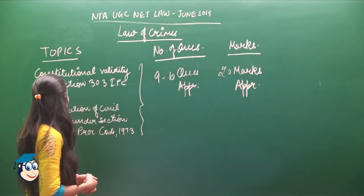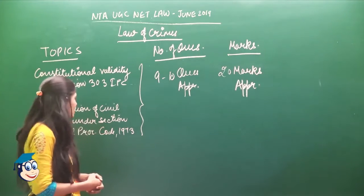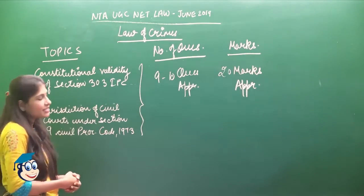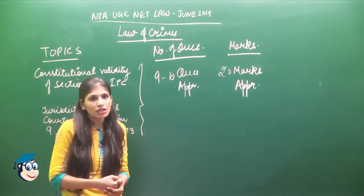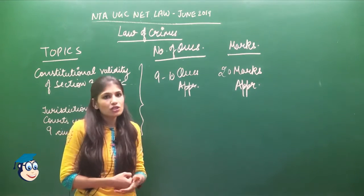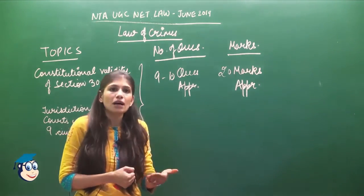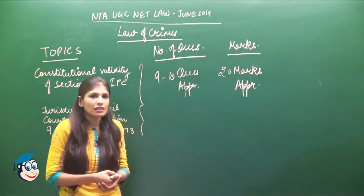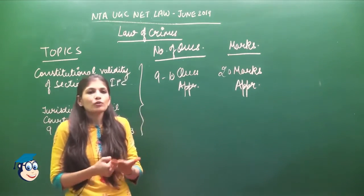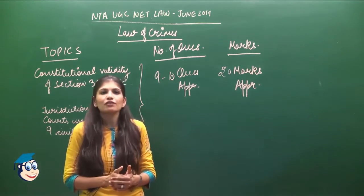For today's session, the two topics are: first, the constitutional validity of Section 303 under the Indian Penal Code (IPC); and second, the jurisdiction of civil courts under Section 9 of the Civil Procedure Code 1973. We are going to discuss these two topics today through case law.